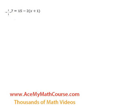And here we have another equation. So 7 is equal to 15 minus 2 times x plus 1. Okay, where do we get started?